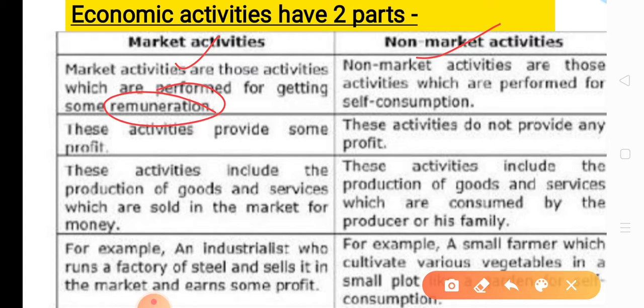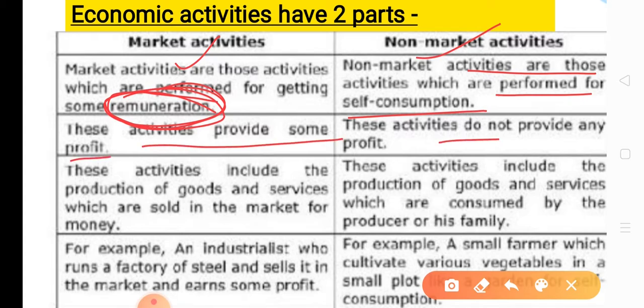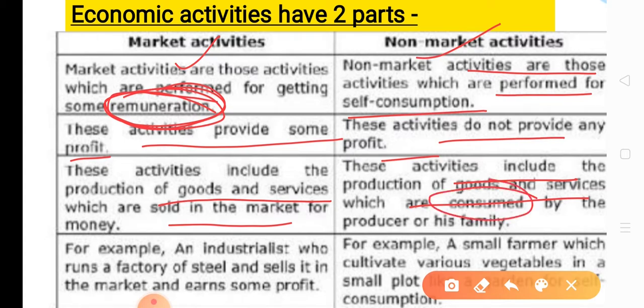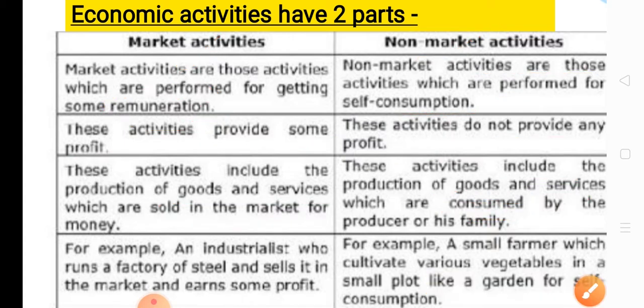If you have a small farm where you grow vegetables and fruits only for your own consumption, that is not a market activity — that is a non-market activity. Non-market activities are those performed for self-consumption. Market activities include the production of goods and services which are sold in the market for money. Non-market activities include production of goods and services consumed by the producer or their family. It is easy to understand the difference between market and non-market activities.